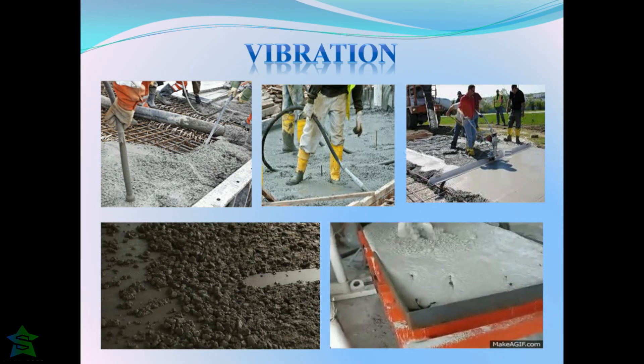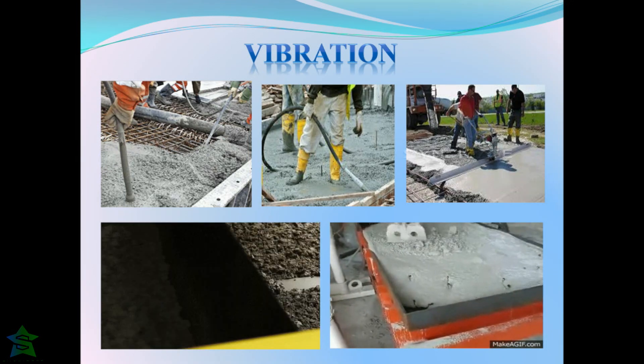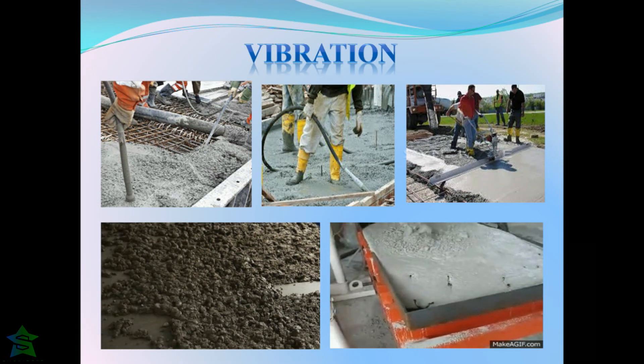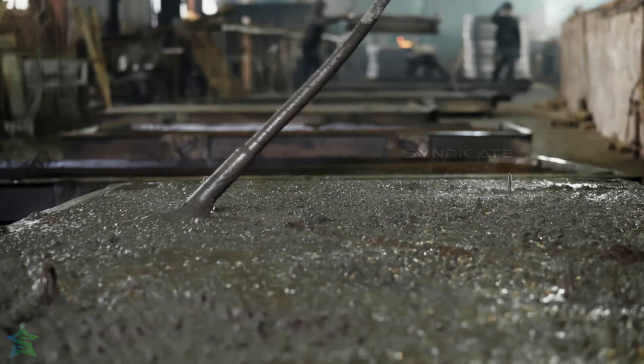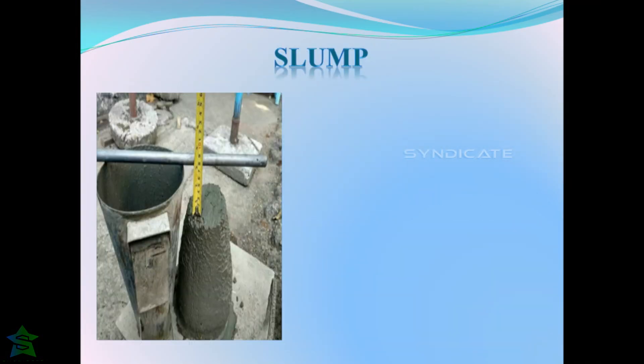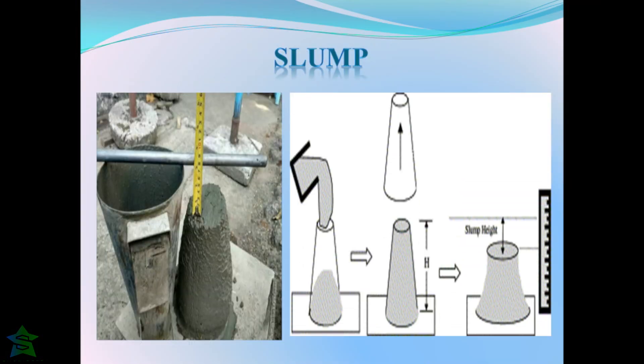Vibration of concrete is one of the most important methods of compaction. It should be noted that dry mix should be vibrated. If a too wet mix is excessively vibrated, then the concrete gets segregated. Vibration must be done only for a required period of time for optimum results. Too much vibration, especially in a very wet mix, results in segregation of concrete, where coarse aggregate tends to move down and cement slurry stays at the top.